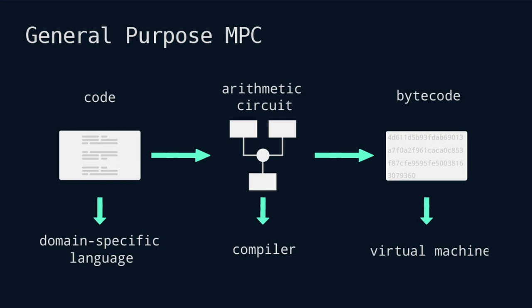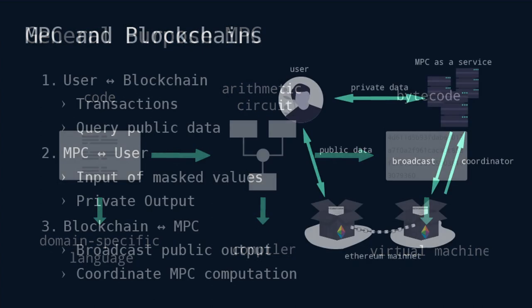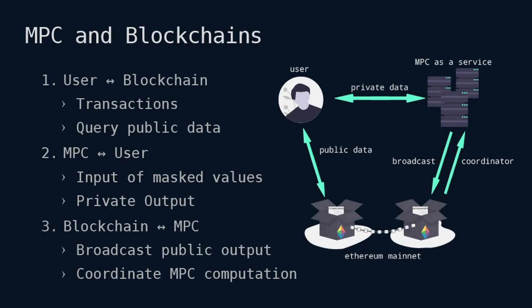For general purpose MPC, it's similar to the zero knowledge case where the developer writes his code in some domain-specific language — we'll see later why we need that. A compiler takes care of it and compiles it to an arithmetic circuit, or it's also possible to use a Boolean circuit. After that, it gets further compiled into bytecode for some VM. The things we need for general purpose MPC are the domain-specific language, compiler, and virtual machine. But we also want to somehow connect this MPC to the blockchain.